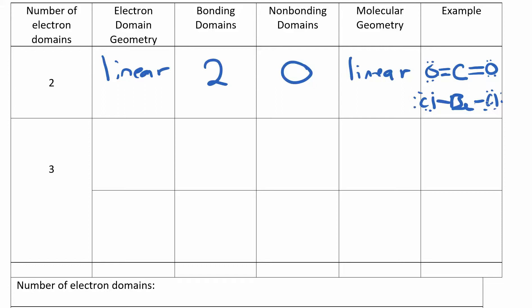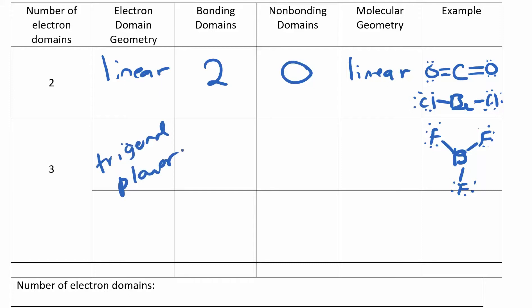Now let's look at three electron domains. If I had BF₃, I'll draw those lone pair electrons, but boron — how many electron domains does boron have? One, two, three. It has three electron domains, so the electron domain geometry is trigonal planar. In this case I have three bonding and zero non-bonding. I don't have any dots around that boron, so the molecular geometry is the same — also trigonal planar.